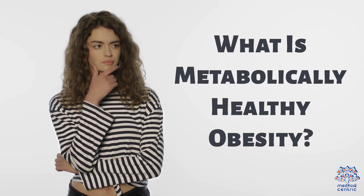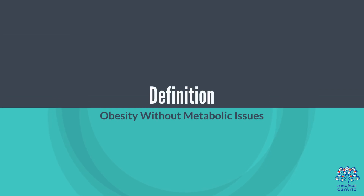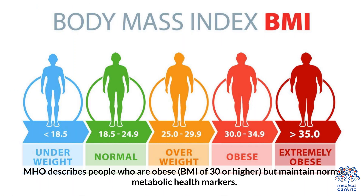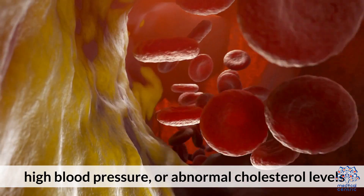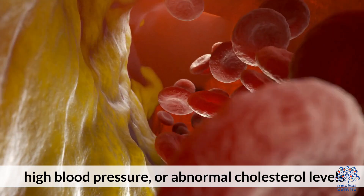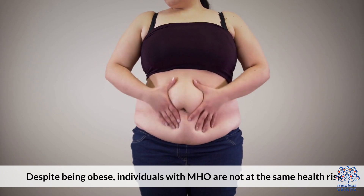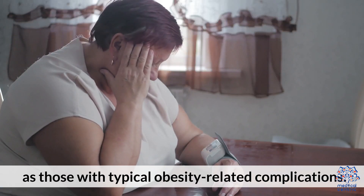What is Metabolically Healthy Obesity? MHO describes people who are obese, with a BMI of 30 or higher, but maintain normal metabolic health markers. This means they do not experience conditions like insulin resistance, high blood pressure, or abnormal cholesterol levels. Despite being obese, individuals with MHO are not at the same health risk as those with typical obesity-related complications.